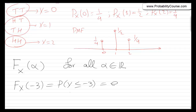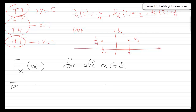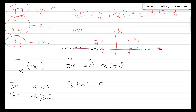So for alpha less than zero, Fx of alpha is zero. How about if alpha is larger than or equal to two? For example, Fx of 3 is the probability that x is less than or equal to 3, which is one, because x is always less than or equal to 3. So Fx of alpha equals one for all alpha greater than or equal to two. Note that we need to be careful about when we use greater than or equal to versus strictly less than.